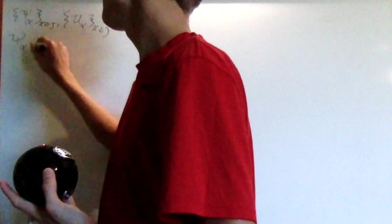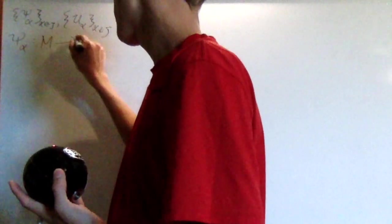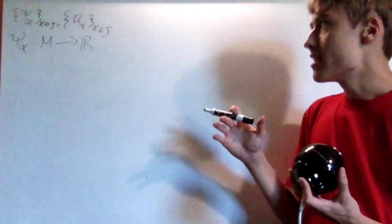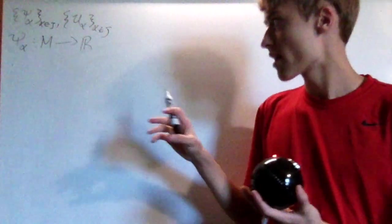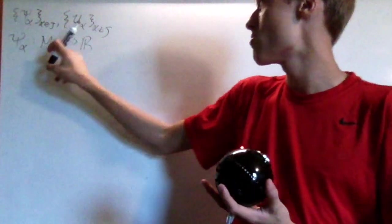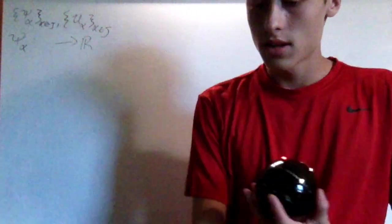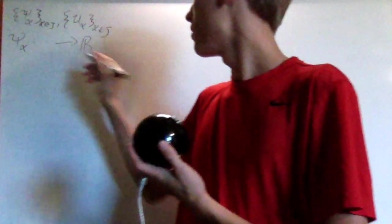They had some properties but the fundamental idea was that it was a smooth map from your smooth manifold down to the real numbers. Let's keep all of the properties that we had except let's change the fact that it's a smooth map from your smooth manifold down to the real numbers to that it's a continuous map from a topological space down to the real numbers.